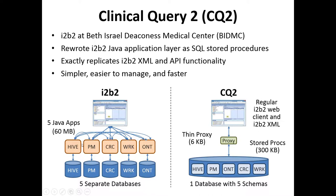For Clinical Query 2 — this is our rewrite at Beth Israel. To remind you, i2b2 is really a whole bunch of separate applications, each one called a cell; together they form a hive. There's a front-end web client, a Java layer that forms all the APIs, and multiple back-end databases. What we did was take all the databases, combine them into one big database with multiple schemas, and write all the Java code as database stored procedures. Everything is contained within a single database. There's a really thin proxy that takes the XML from the web client, sends it to the database, the database returns XML, and the proxy sends it back to the web client. By doing this it becomes much simpler, easier to manage, and it actually runs a lot faster.